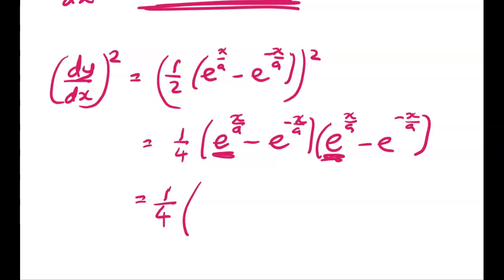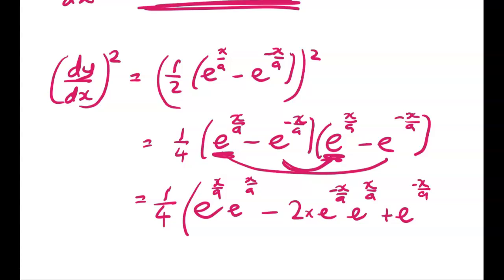Now I've got this times this, which gives me e to the x over a, e to the x over a, minus this middle term, times 2. And then plus e to the negative x over a, e to the negative x over a.